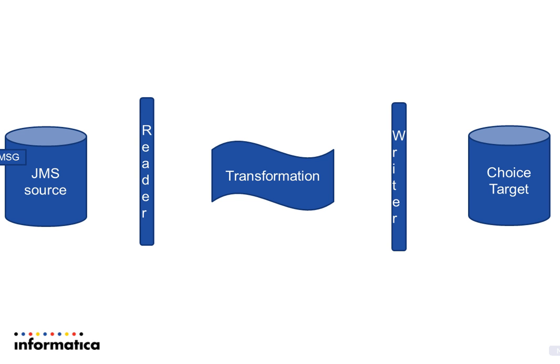After the above threads are successfully initialized, the reader thread performs a read on the source and the message is read into the PMDTM. This is followed by an acknowledgement sent back to the source from the reader thread. Since the source has destructive read, the source system removes the message.